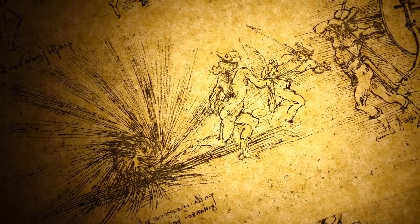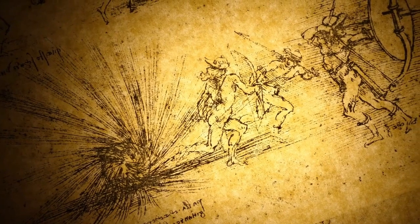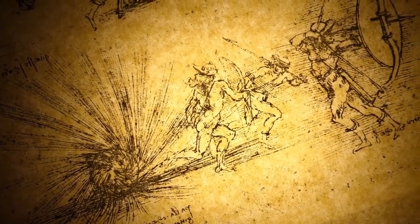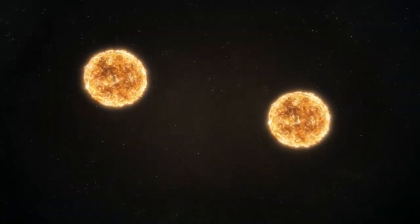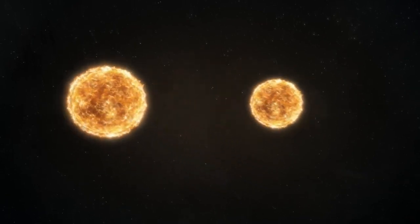In fact, in about 5 billion years, our sun is expected to undergo a similar transformation, ending its life by casting off its outer layers and forming a planetary nebula of its own.